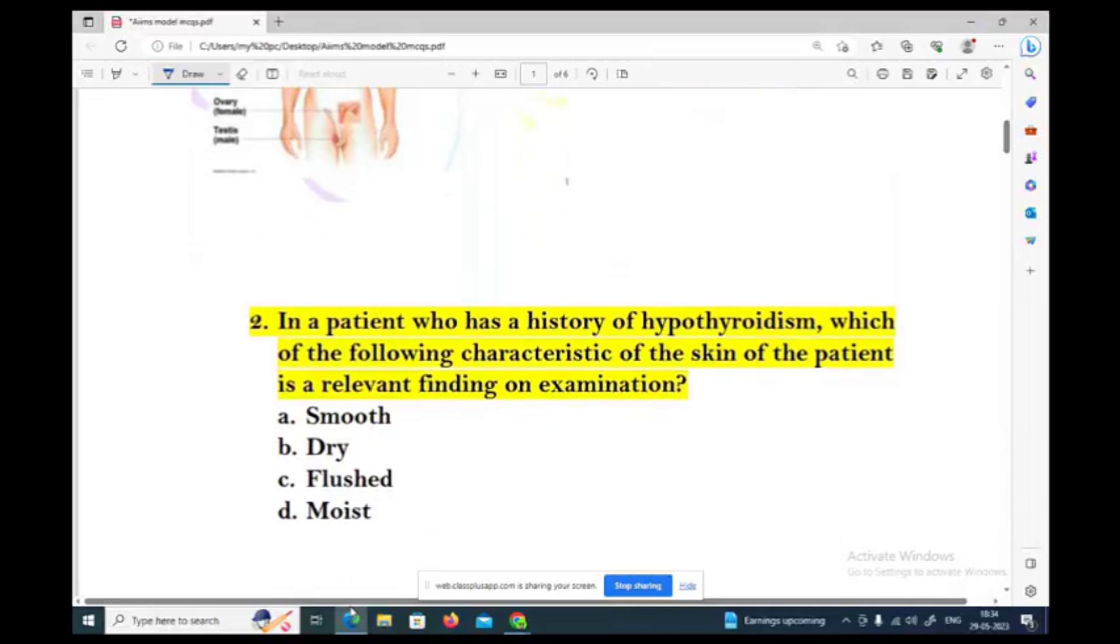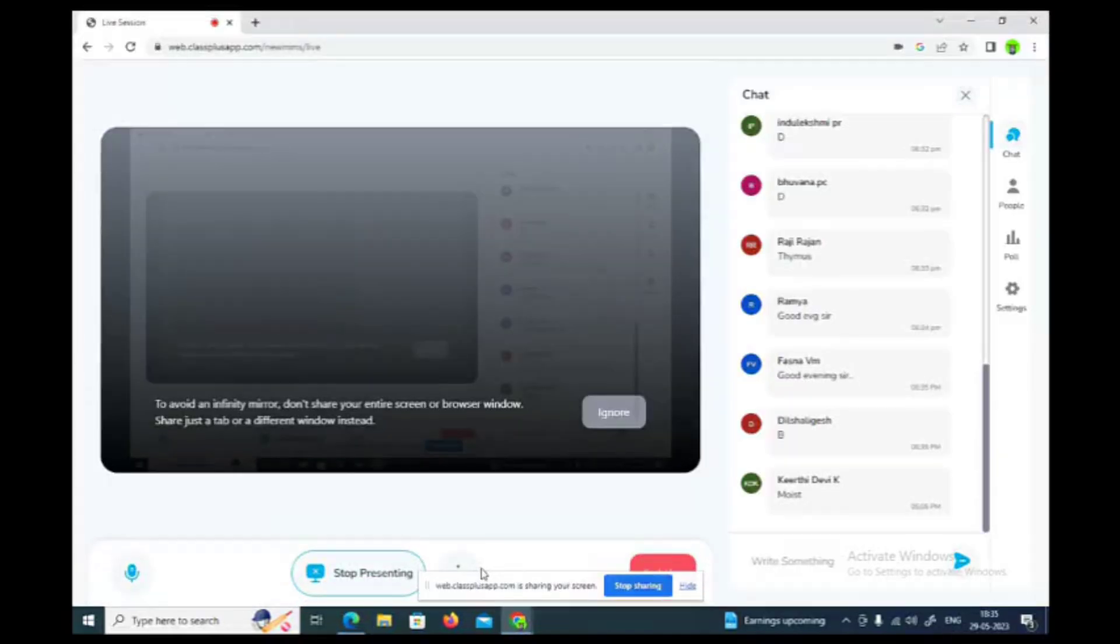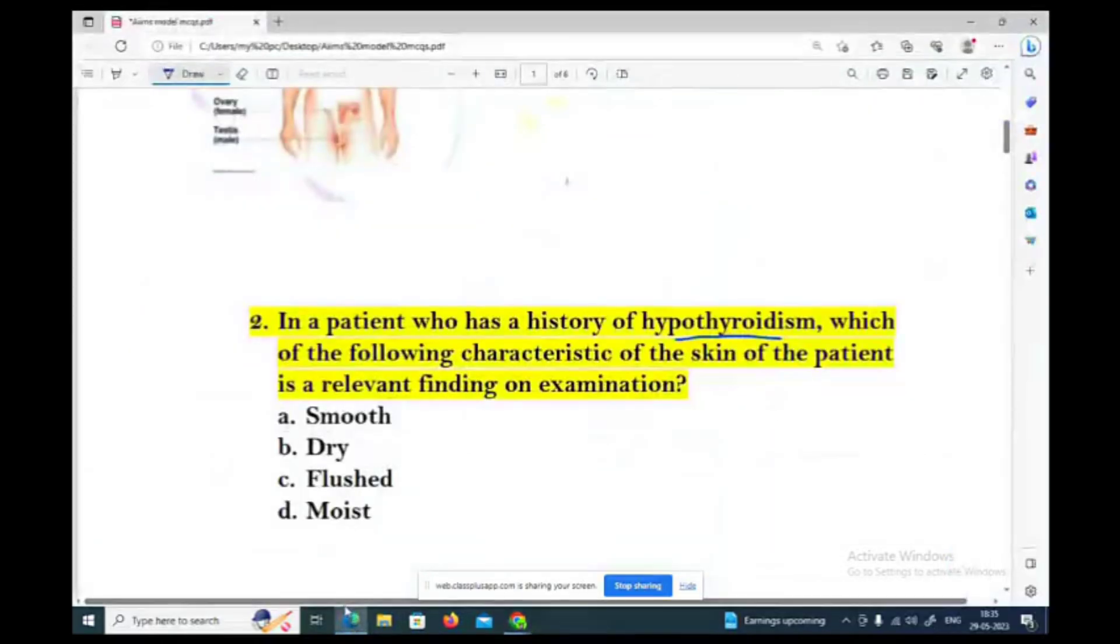In a patient who has a history of hypothyroidism, which of the following characteristic of the skin of the patient is a relevant finding on examination? Options: smooth, dry, flushed, moist. Hypothyroidism, not hyperthyroidism.